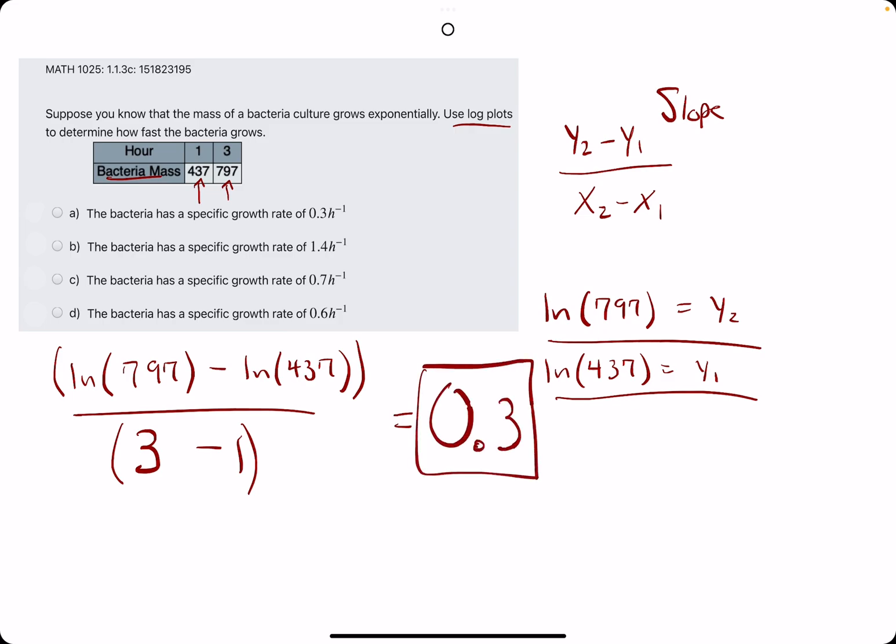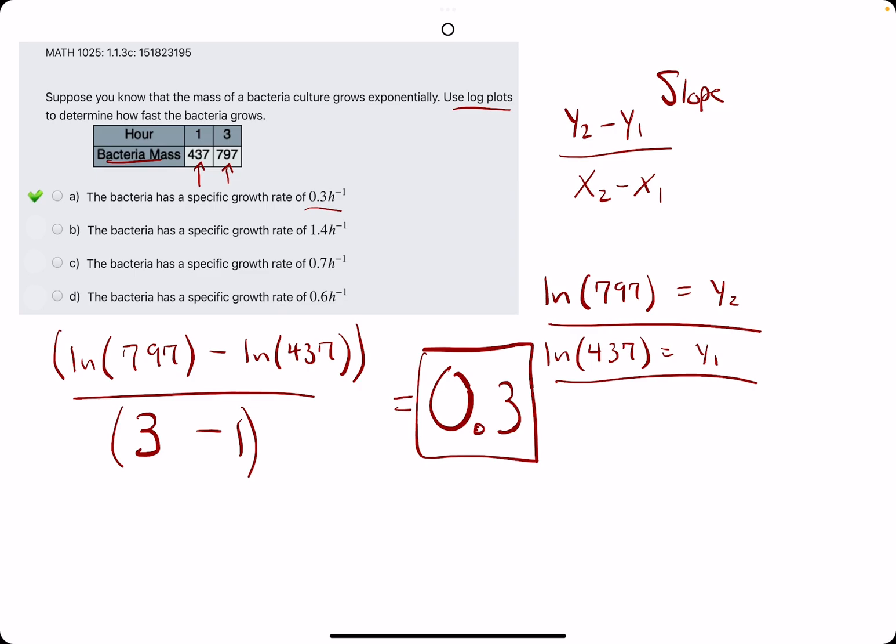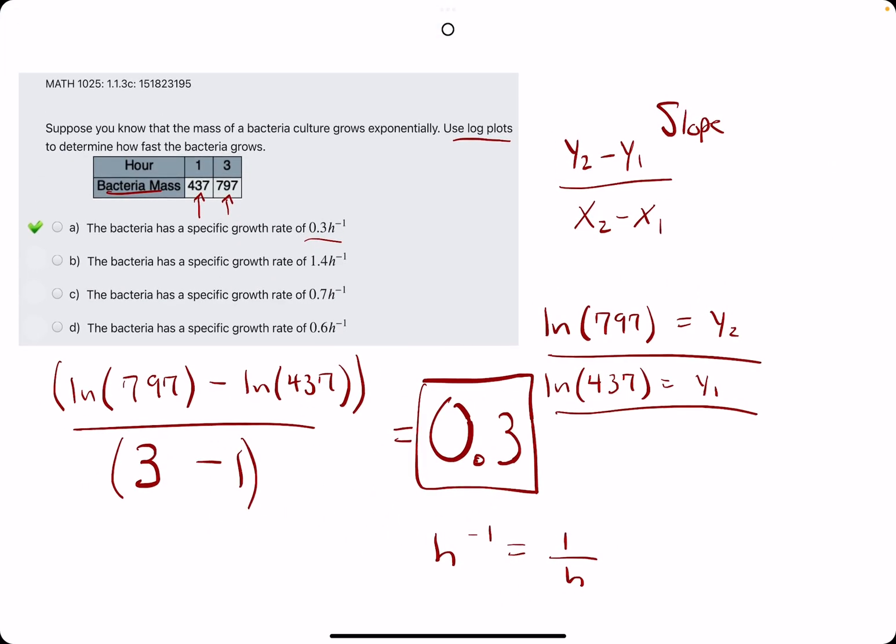And so the answer with 0.3 will be our answer. We're finding the rate of change or the slope between those two points. And the h to the negative 1 is very silly, but what they're describing is 1 over h to the positive 1.